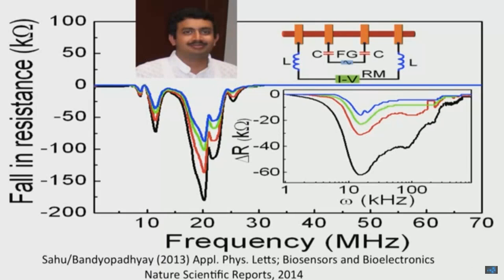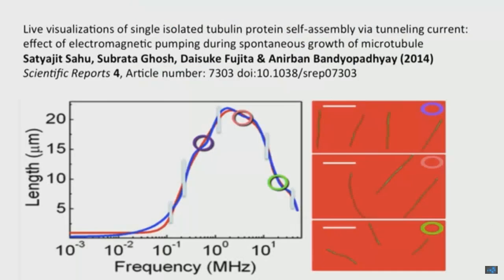This was at room temperature and he showed these were quantum effects. Then he used two megahertz to stimulate the assembly of microtubules and found that two megahertz was the sweet spot to make microtubules grow. Remember, microtubules fall apart in Alzheimer's disease, so this might be useful.